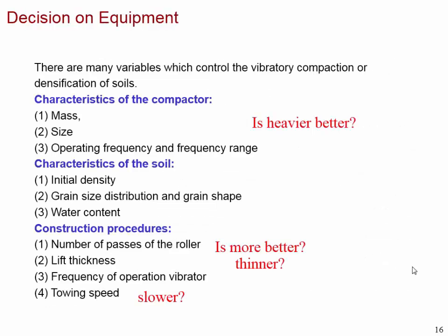How do we decide the equipment type? There are several relevant characteristics: the mass of the compactor, the weight and size of the drum — wider is better — and operating frequency and frequency range for vibration. The characteristics of the soil are also very important: initial density, grain size distribution, grain shape, and water content. Grain size distribution tells you how much fine fraction is present. Construction procedure factors include number of roller passes, lift thickness, vibration frequency, and towing speed.